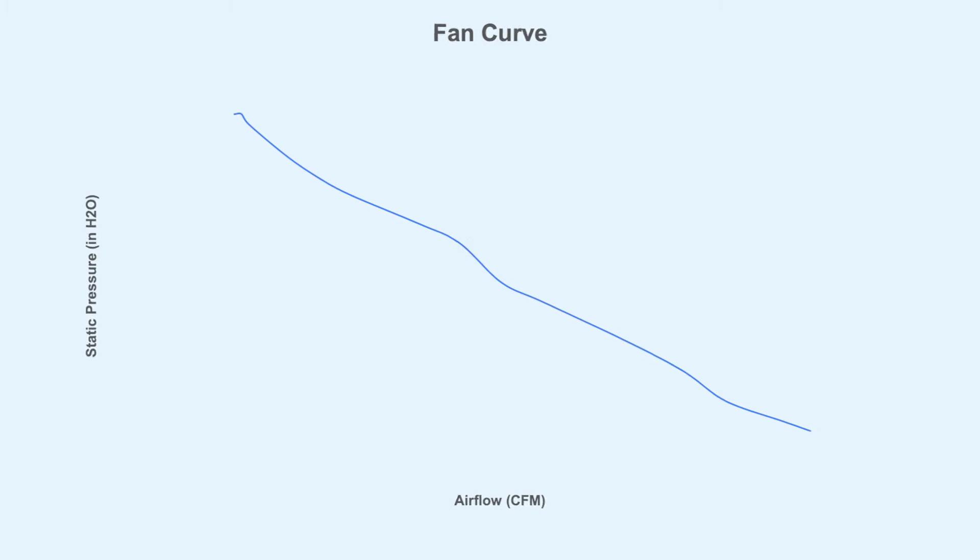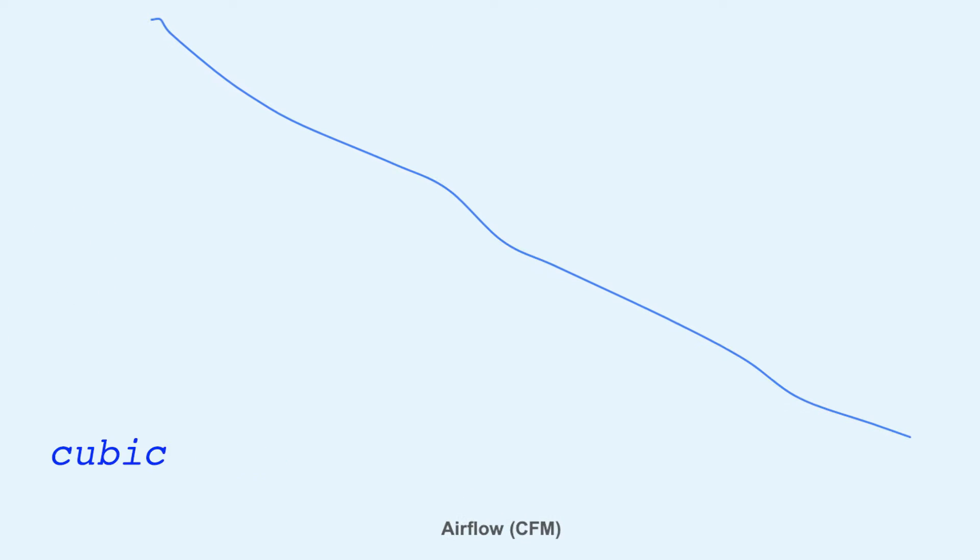Let's dive in. Now the x-axis is the airflow, measured in cubic feet per minute, or in short, CFM.